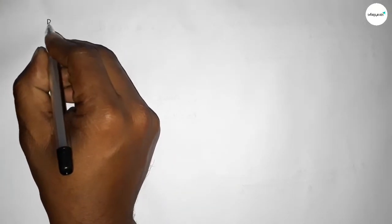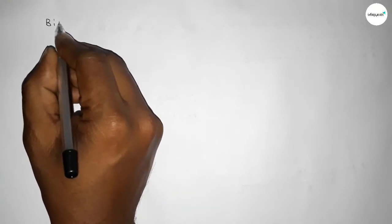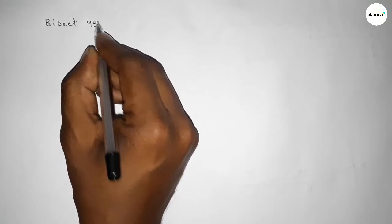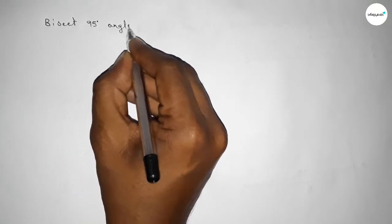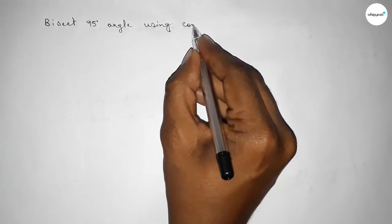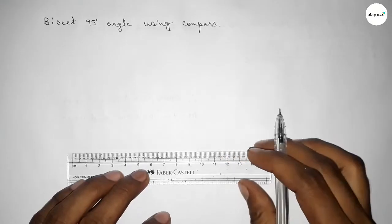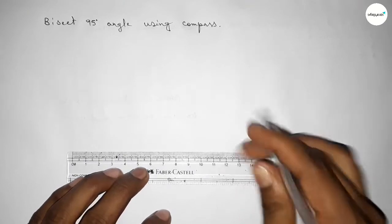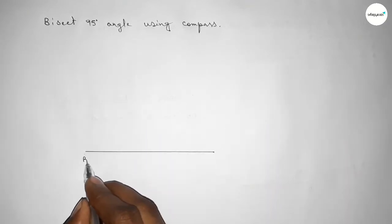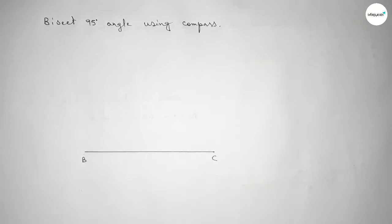Hi everyone, welcome to Size Share Classes. Today in this video we have to bisect a 95-degree angle using a compass. So let's start the video. First of all, we have to draw a line of any length, taking point B here and point C here. Now we have to draw a 95-degree angle at point B.